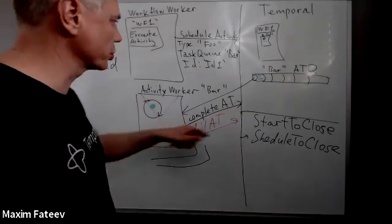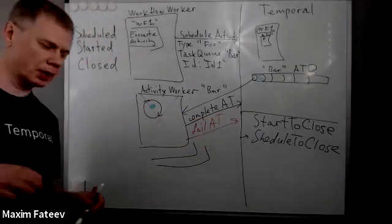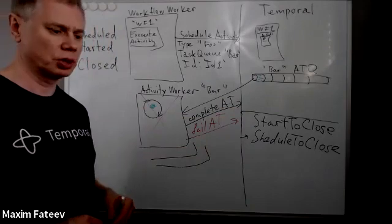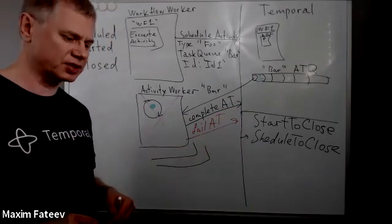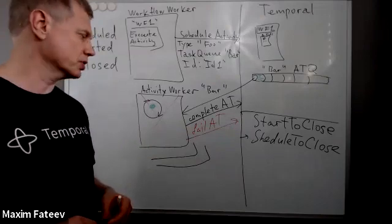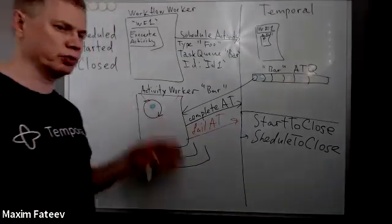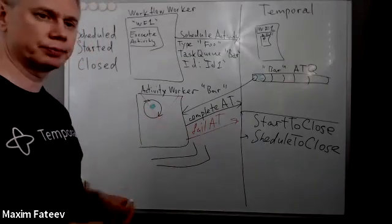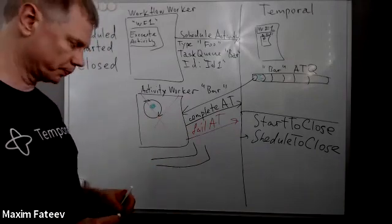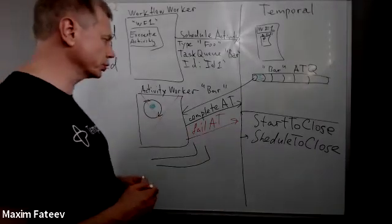What would be a good value for start-to-close? The most important rule is that start-to-close should be longer than the maximum possible time of activity execution. So if your activity on average takes five minutes but can sometimes take five hours, then the start-to-close timeout should be over five hours. The problem is that if your worker goes down it will only be retried after that timeout, or reported back to the workflow as failure if the retry policy is exhausted — and that is rarely what we want. We want to fail fast.